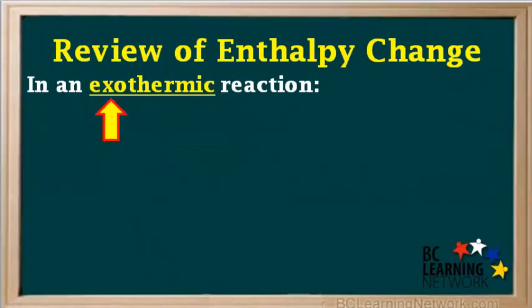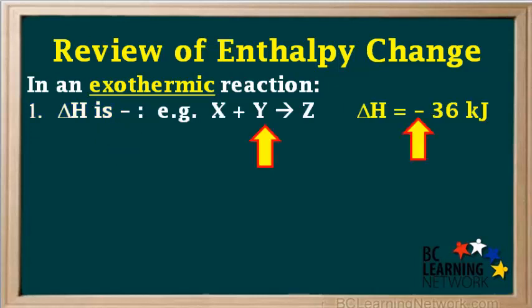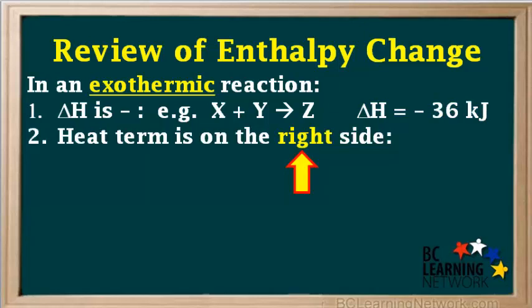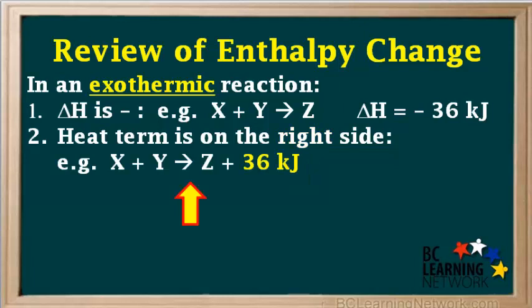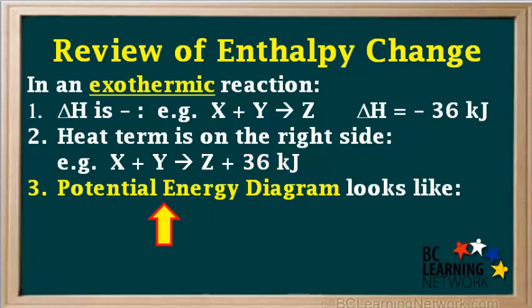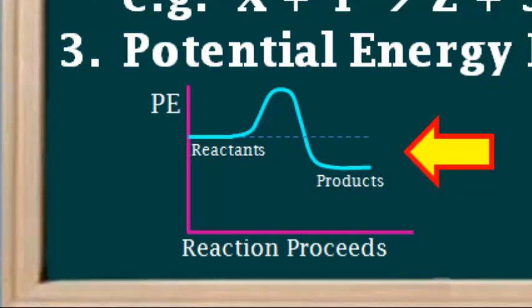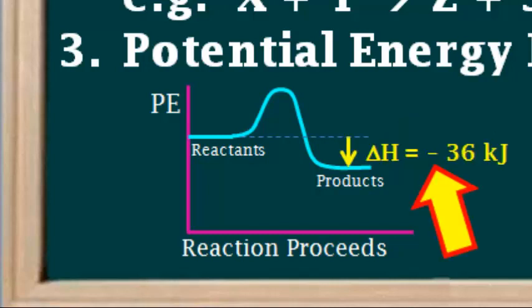Now we'll look at an exothermic reaction. In an exothermic reaction, delta H is negative. An example could be the reaction X plus Y gives Z, and delta H is negative 36 kilojoules. Another way to identify an exothermic reaction is when the heat term is written on the right side. An example would be X plus Y gives Z plus 36 kilojoules. Because the 36 kilojoules is on the right side of the equation, it means that when one mole of X reacts, 36 kilojoules of heat is released to the surroundings. Therefore, the reaction is exothermic. The potential energy diagram for an exothermic reaction looks like this. Notice the products have lower energy than the reactants. The energy difference between the reactants and products is delta H. In this example, it's negative 36 kilojoules.